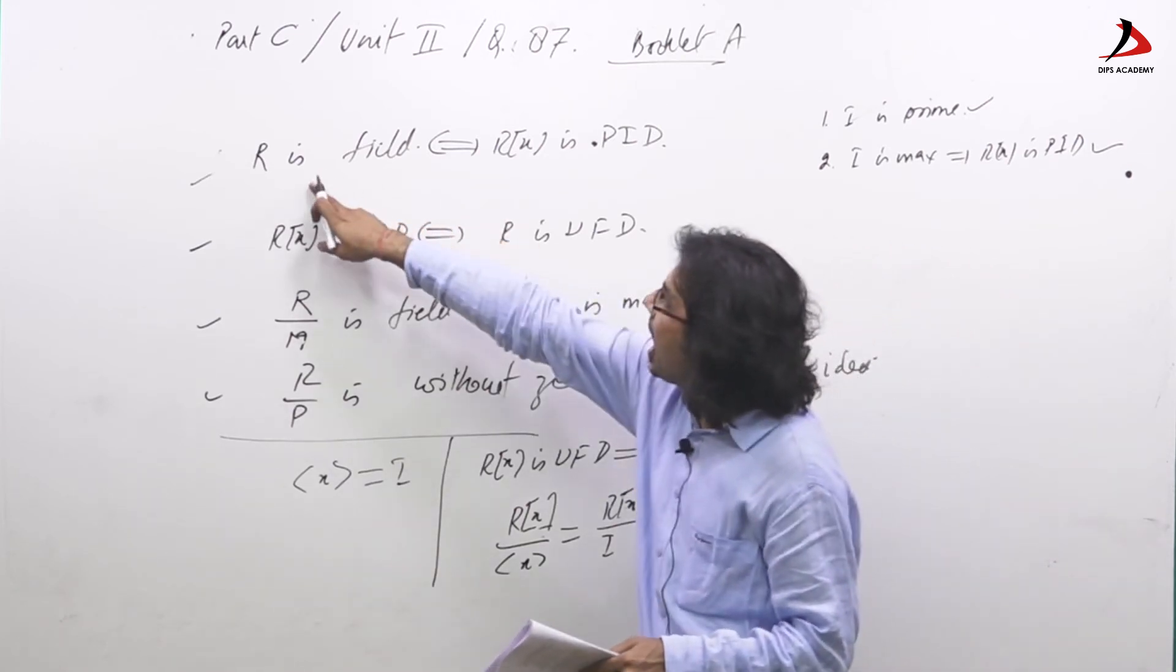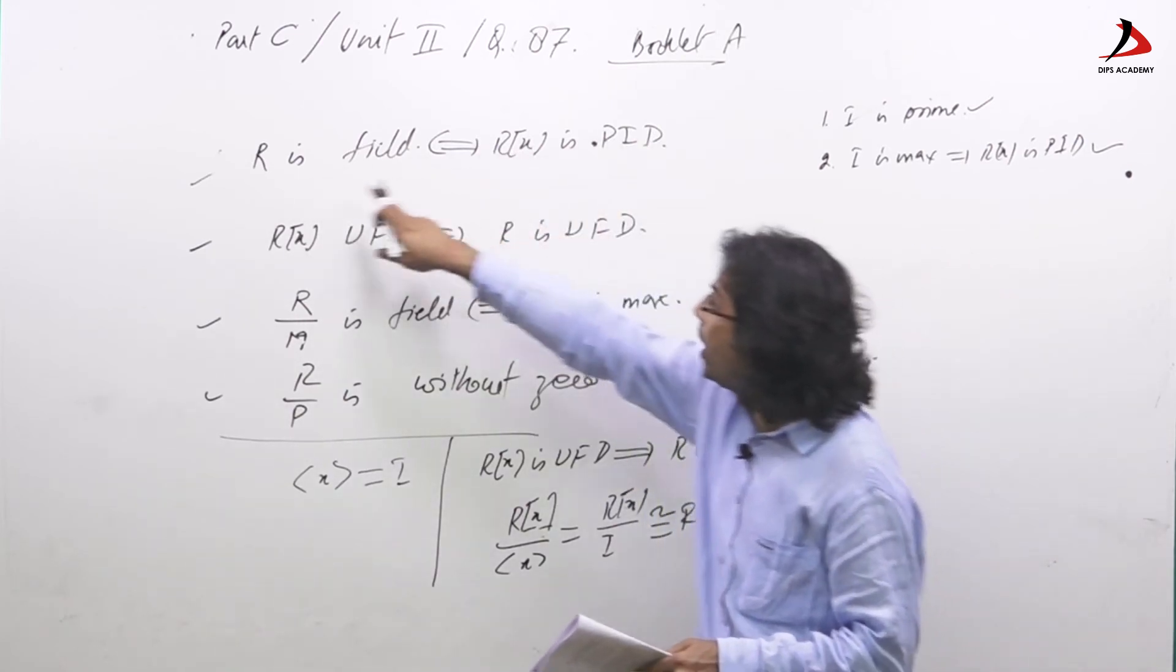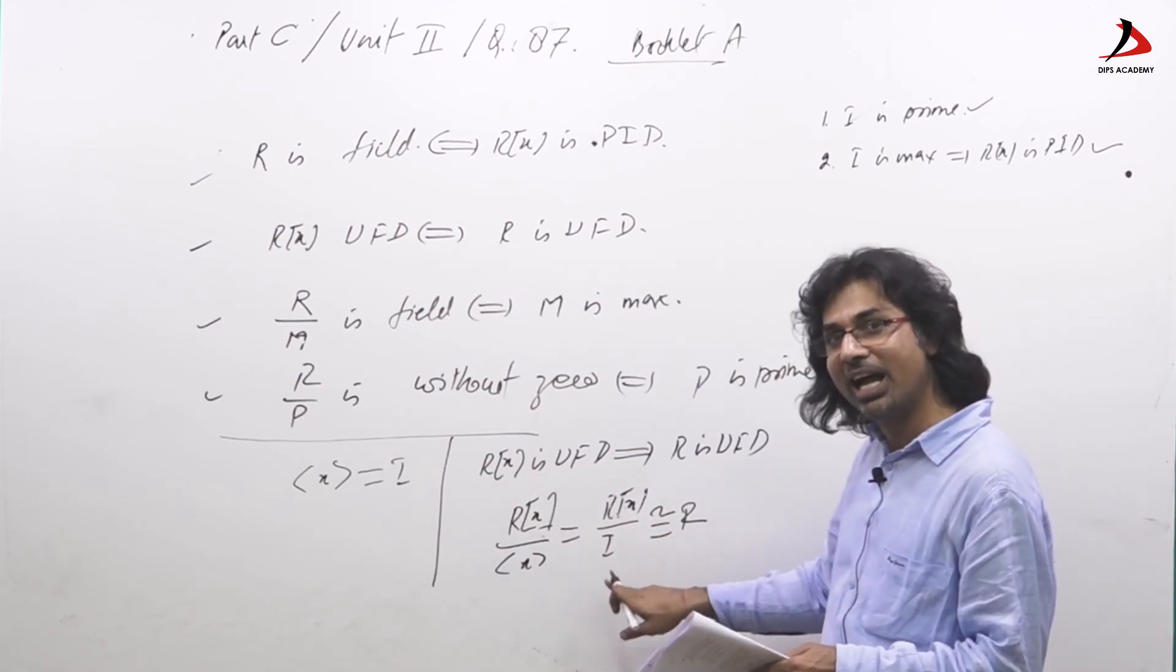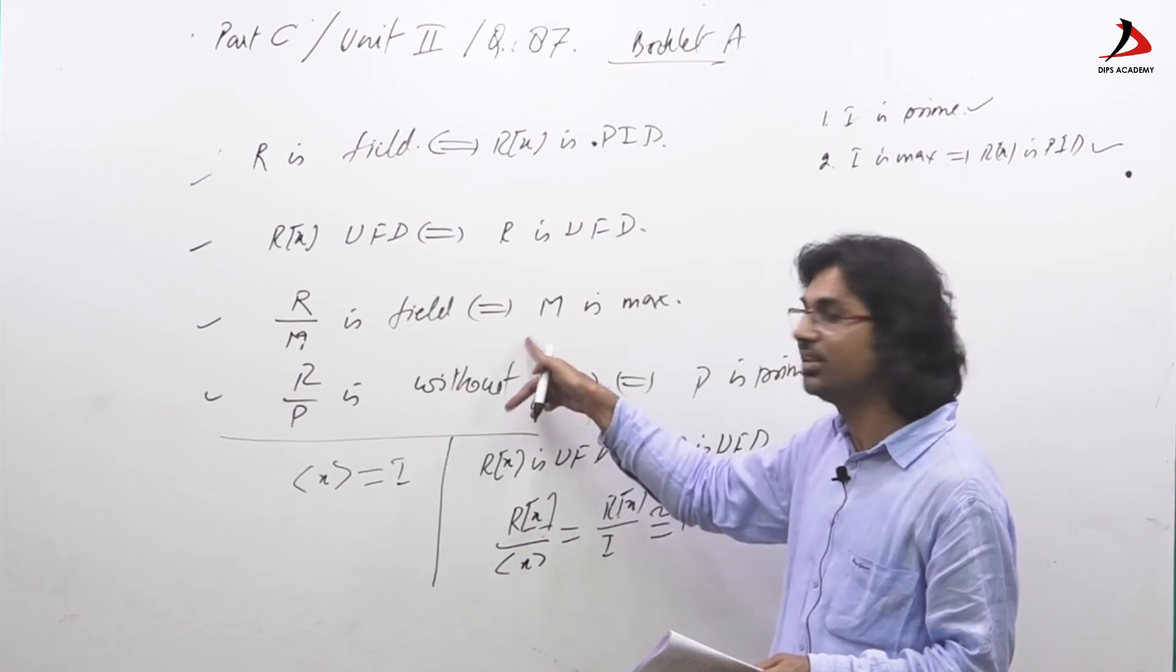By this result, R is field implies Rx is PID. And how R is field? I have proved here. If Rx over I is isomorphic to R, I maximal, this is field by this result.